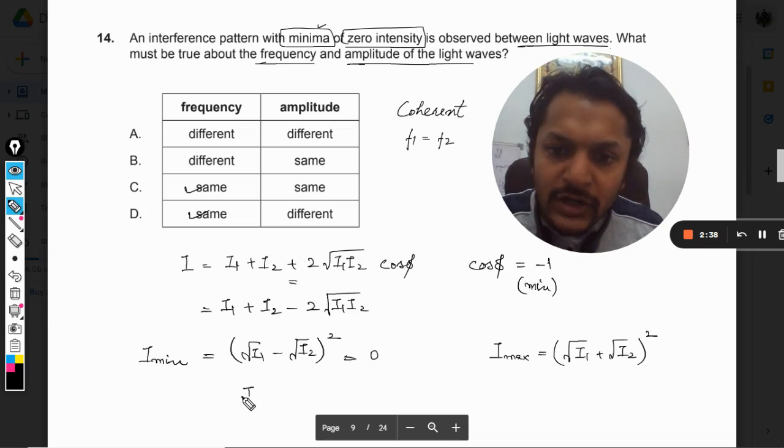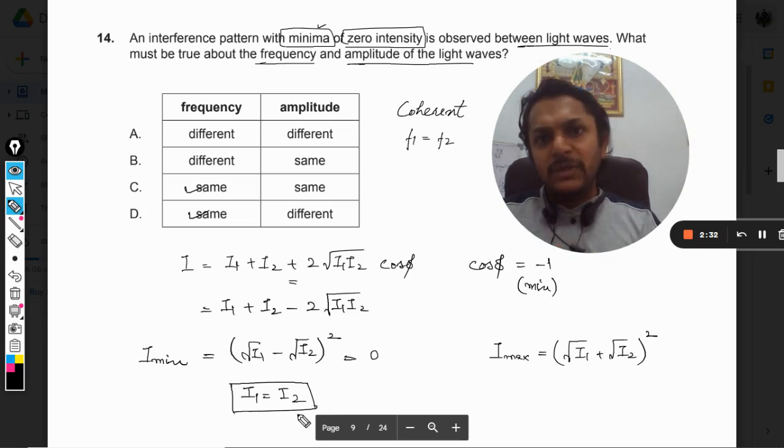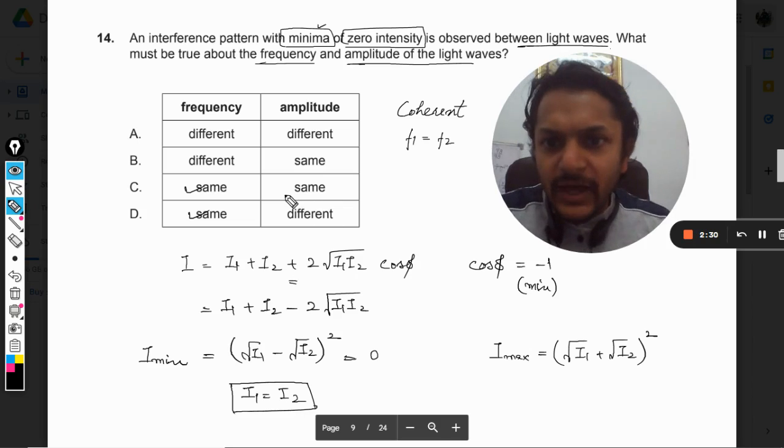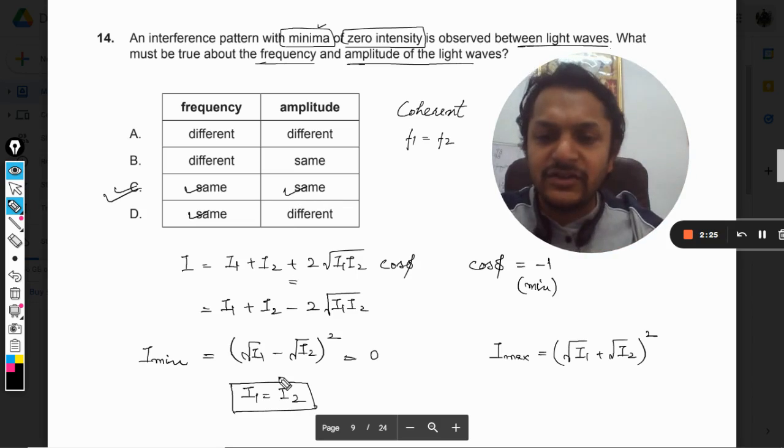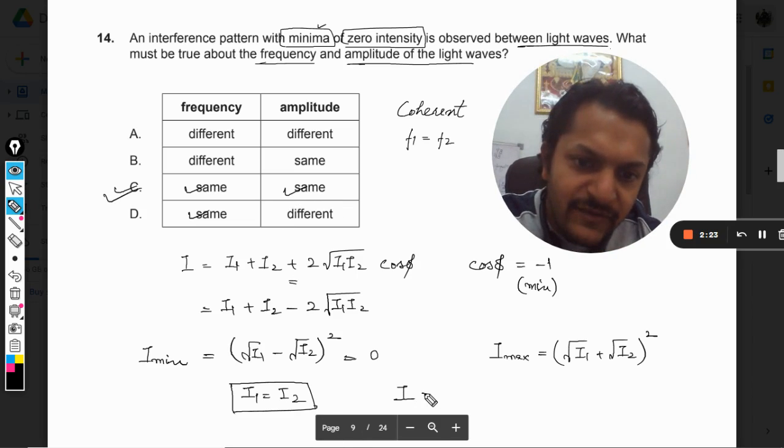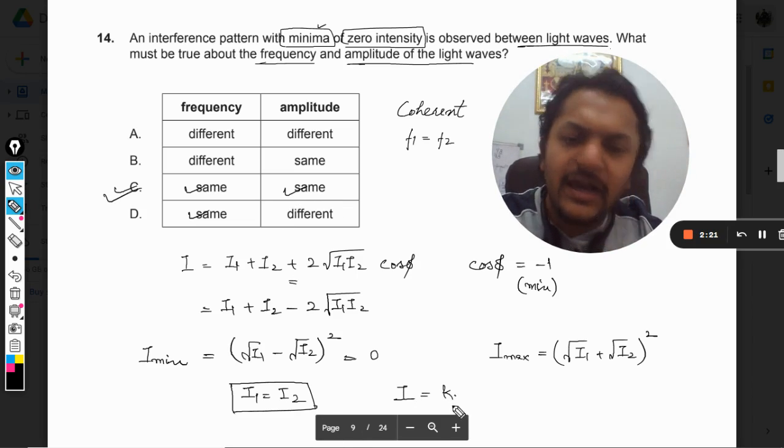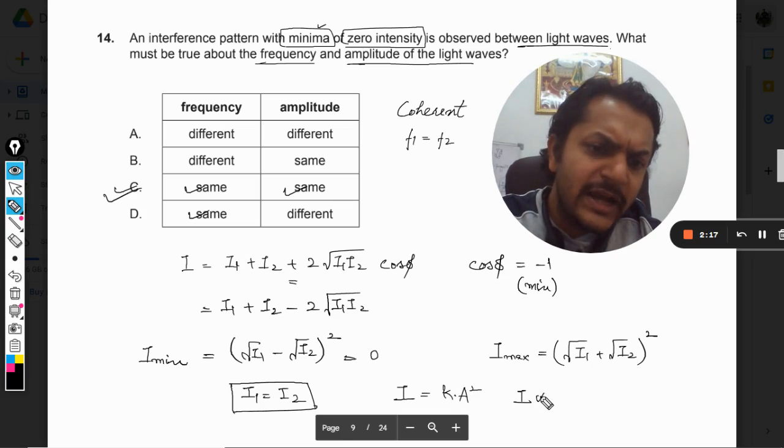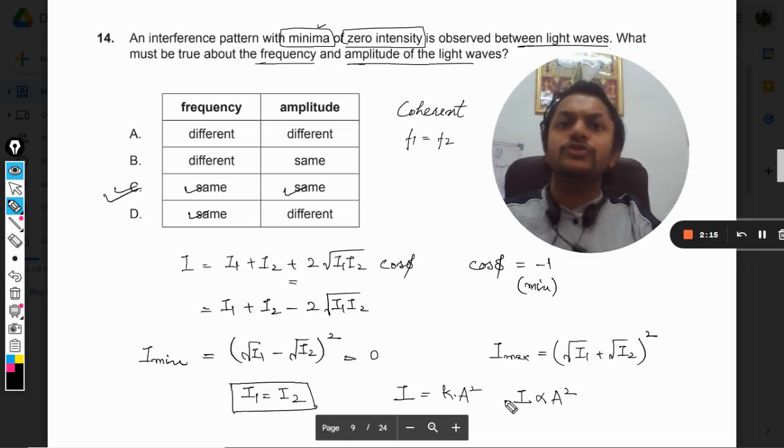Only if I₁ is equal to I₂ you can have zero minimum intensity. So that is why even the amplitudes have to be the same. Now why the amplitude? Why have they not written intensity here? So intensity will be taken as k, another constant, into A squared.